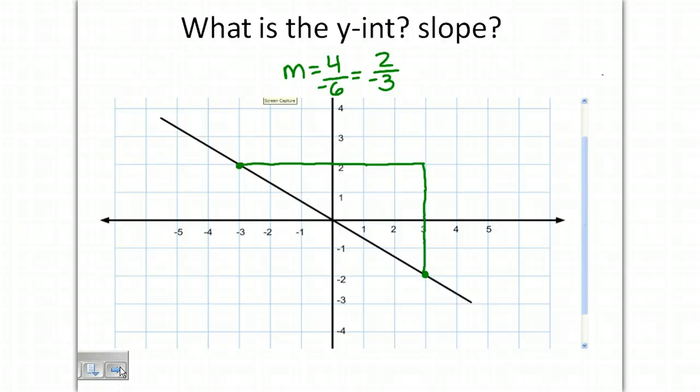Now if we chose different points, let's look at this point here and this point here. So we're choosing a different point. Our rise is negative 2 and our run is positive 3. So our slope is negative 2 over 3, the same as 2 over negative 3. They're the same. They're equal. So it's the same slope.